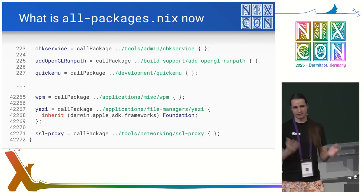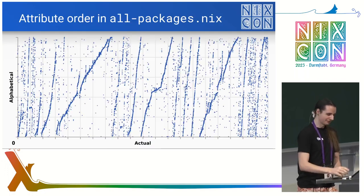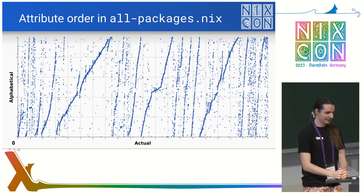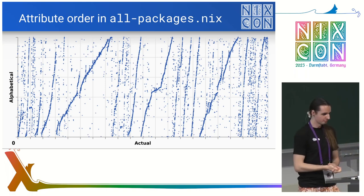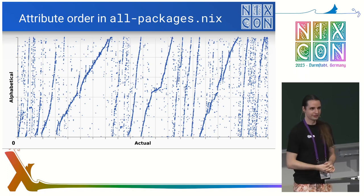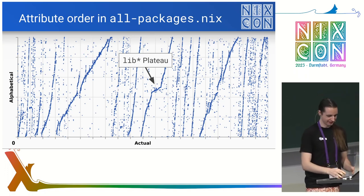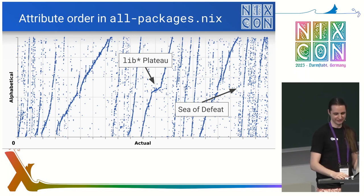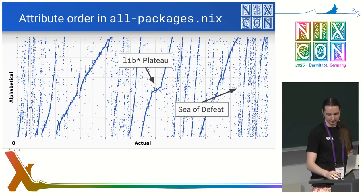If you have such a big file that people are expected to edit manually, there should be some good organization to it, right? Well, not exactly. This shows what it looks like in the grand scheme of things — the order of attributes — and each of these diagonal strikes upward is a somewhat sorted section, but it's rather chaotic. If everything was sorted, it should be a straight line. We also have some geographic highlights: the lib plateau in the middle, and the sea of defeat at the end where people gave up and didn't bother sorting their attributes. I also have a visualization of this over time, which I can maybe show you at the end if we have time.